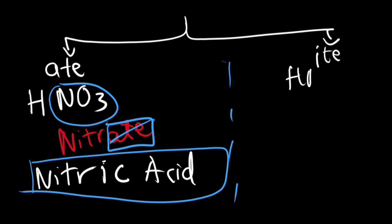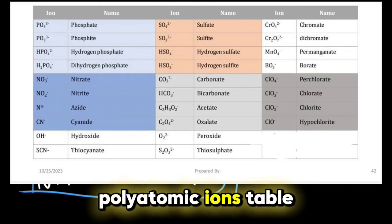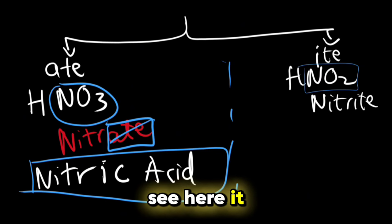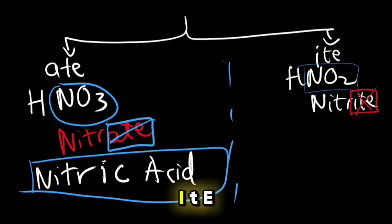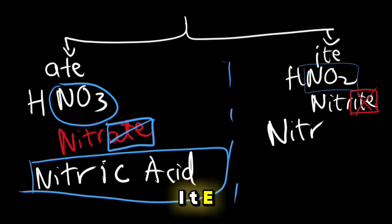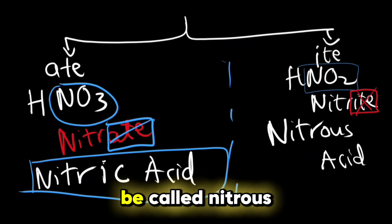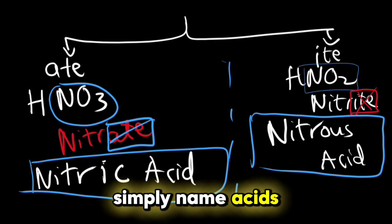Now what if you have HNO2? This NO2, from the polyatomic ion table, is called nitrite. You can see here it ends with ite. So what will you do? You'll cancel out the ite, and instead of ite, you'll write ous, and then you'll add acid. So this should be called nitrous acid. And that is how you can simply name acids.